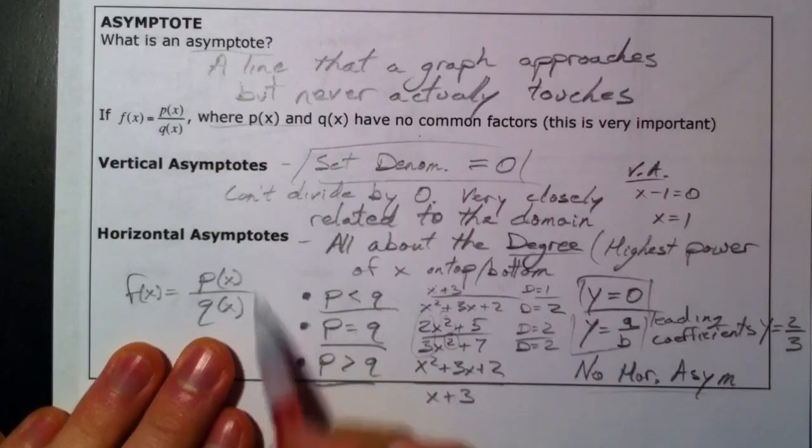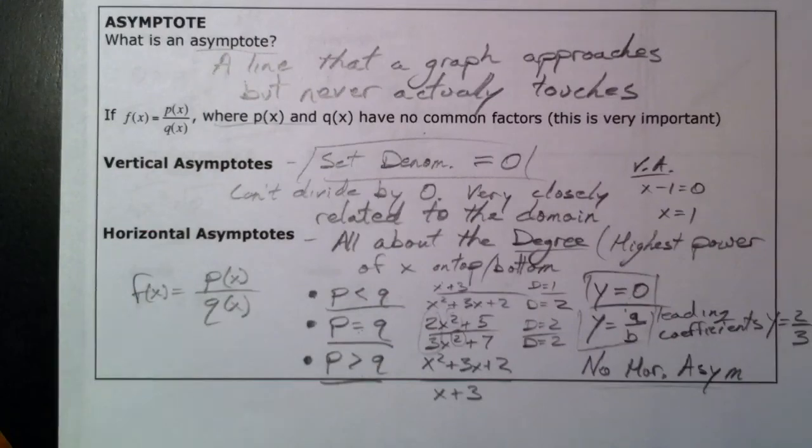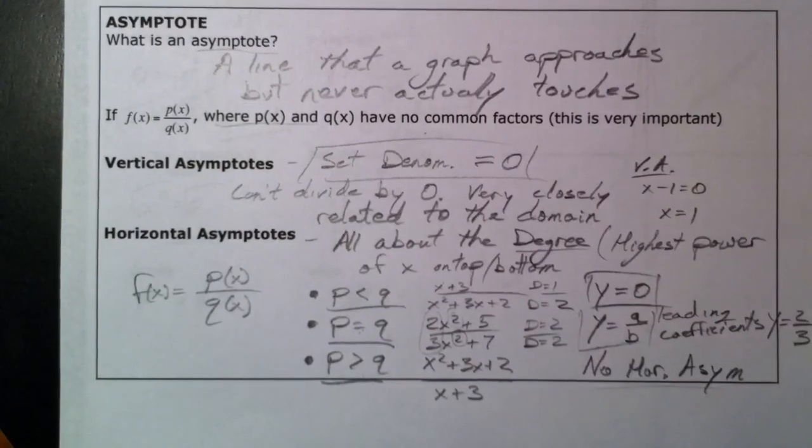But the key to what we're doing is all in the asymptotes - know what happens if p is less than q, the degree on top is less than the bottom, when they're equal, or when the top is bigger. So look over those, know those, and I'll see you in class.